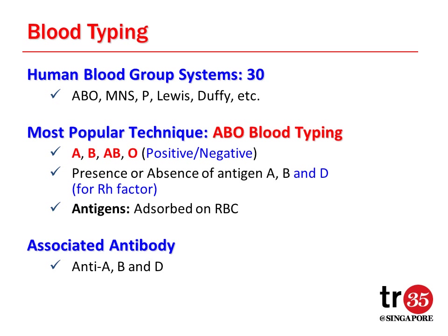Antigen A, B, and D are selective to antibody A, B, and D respectively, which means antigen A interacts with antibody A, antigen B interacts with antibody B, antigen D interacts with antibody D, and these interactions cause red blood cell agglutination.